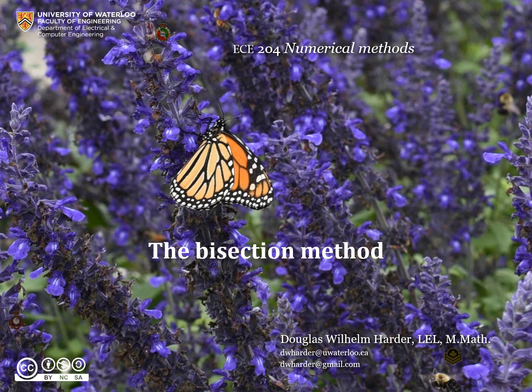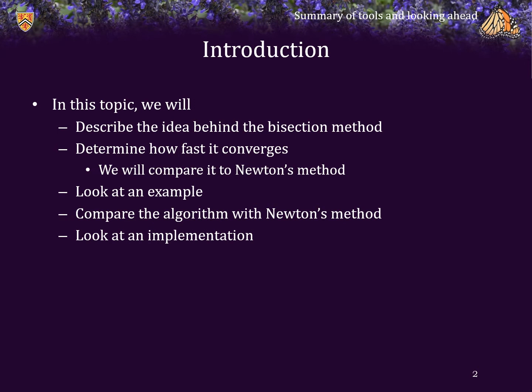Good day, for those of you who do not know me, my name is Douglas Harder. In this topic we're going to look at the bisection method — the idea behind it, a technique for approximating the value of a root of a continuous function using bracketing. We will determine how fast this algorithm converges and compare it to Newton's method, look at an example, and go into further detail comparing it with Newton's method, then look at an implementation.